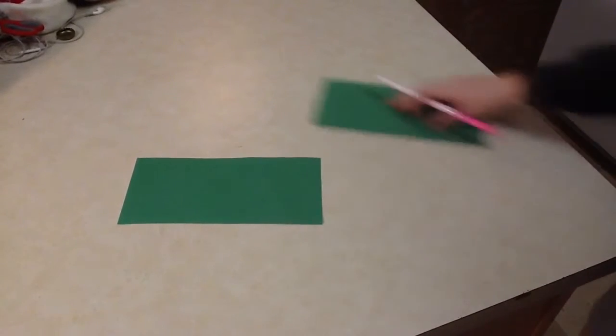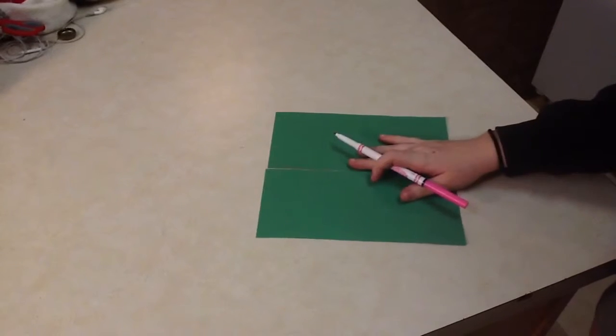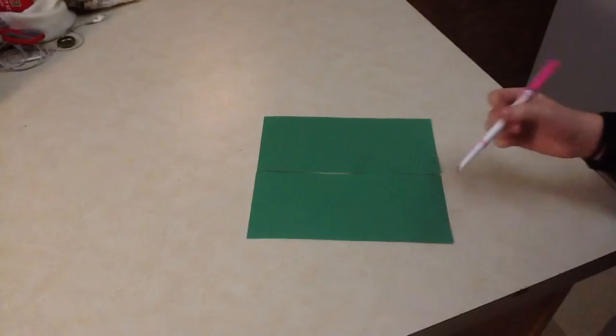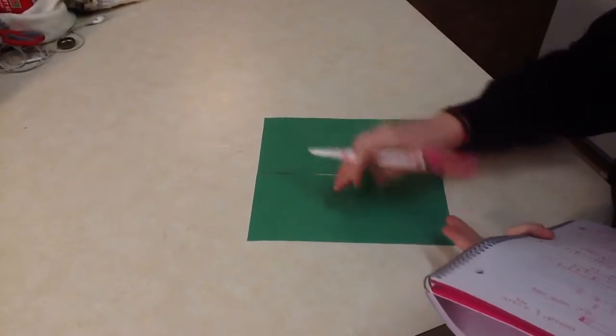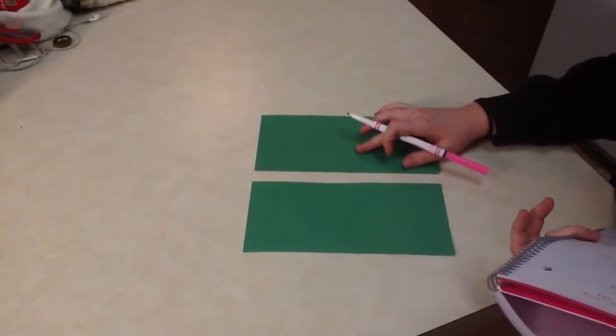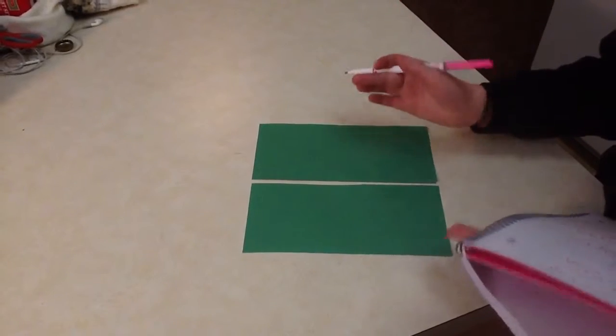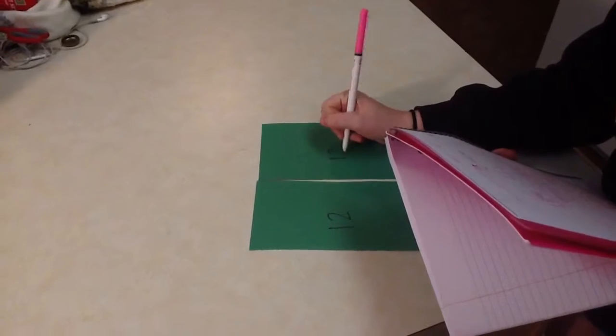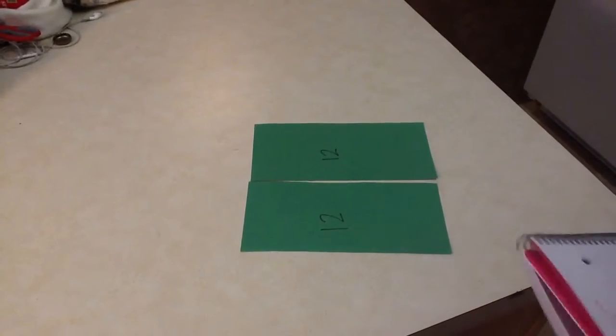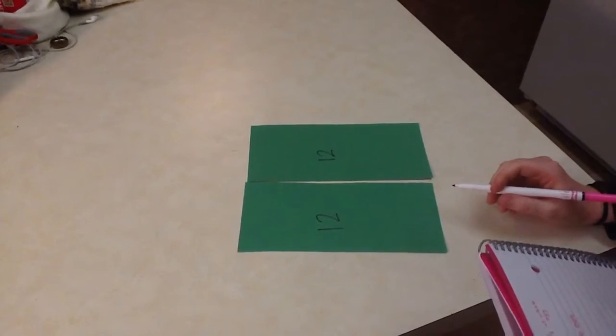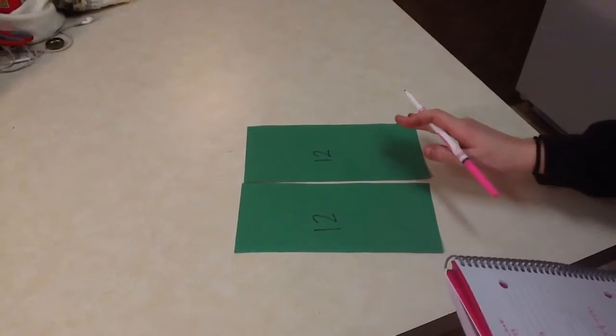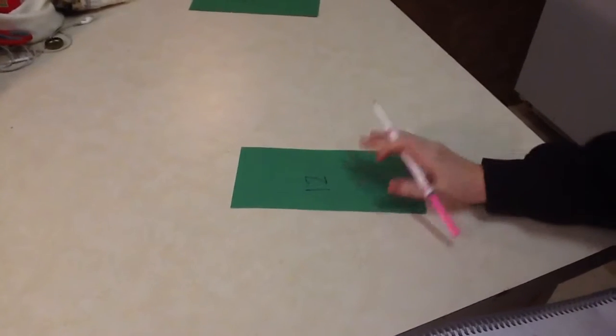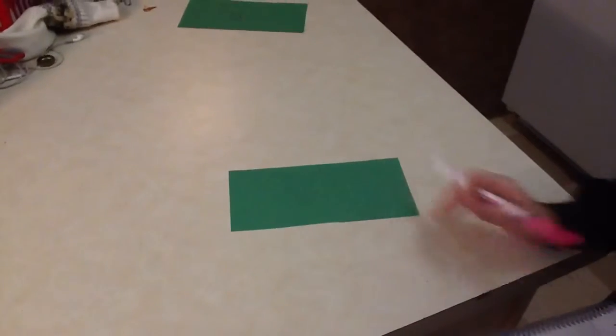Then she decided to look at the problem this way. So this is all 24 eggs, and she said that this is one half of the eggs and this is the other half. She said that 12, or 24 divided by 2, is 12, so these are each 12. She knew that 12 of the eggs hatched, so that was gone, and she was just looking at this part now.